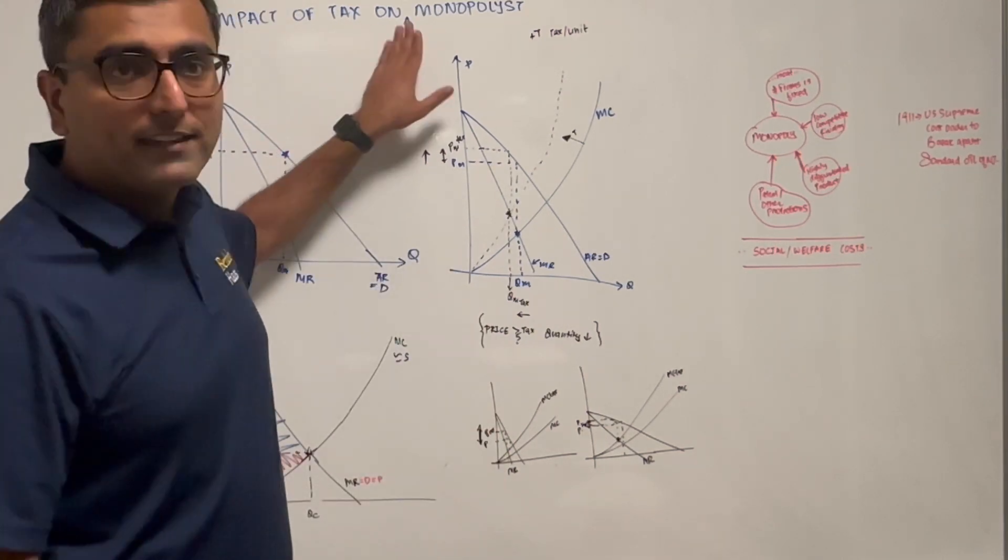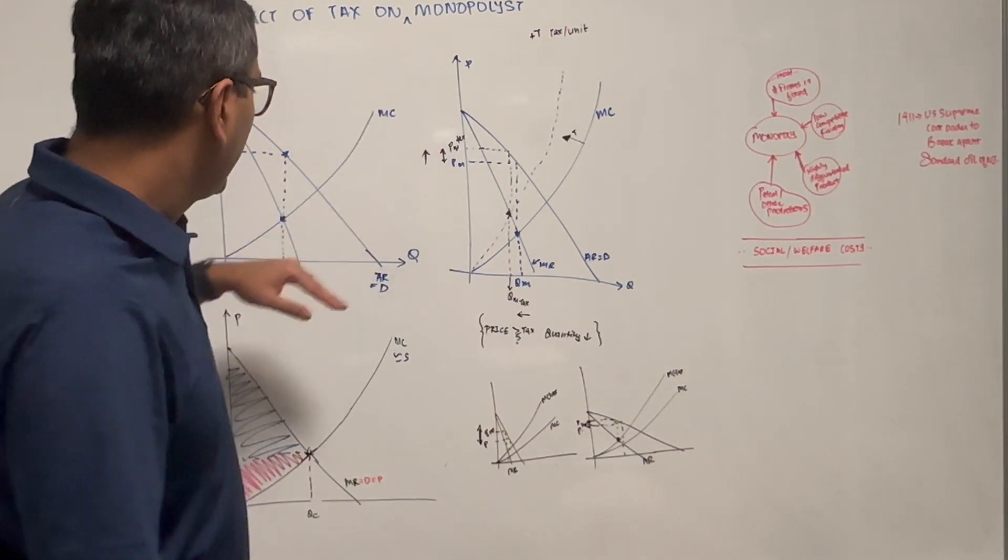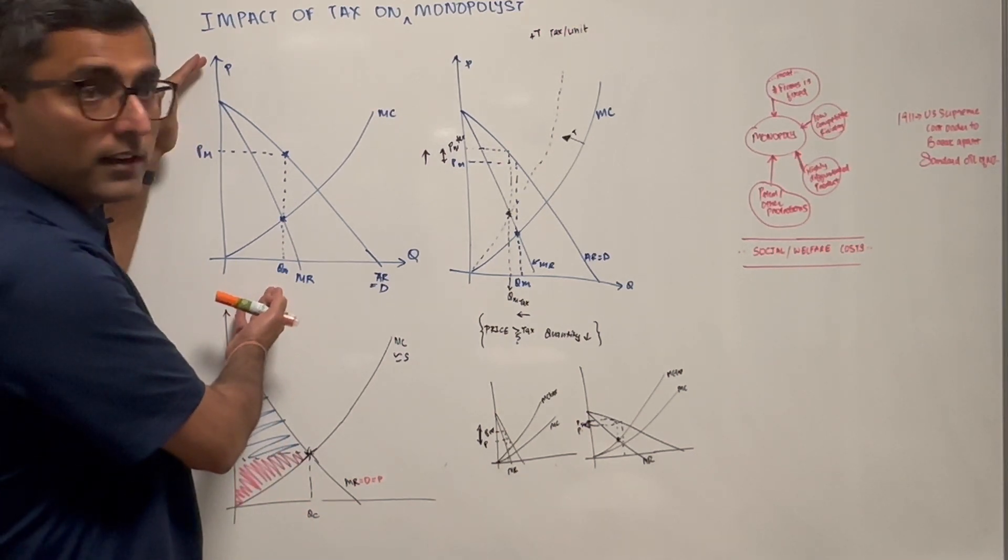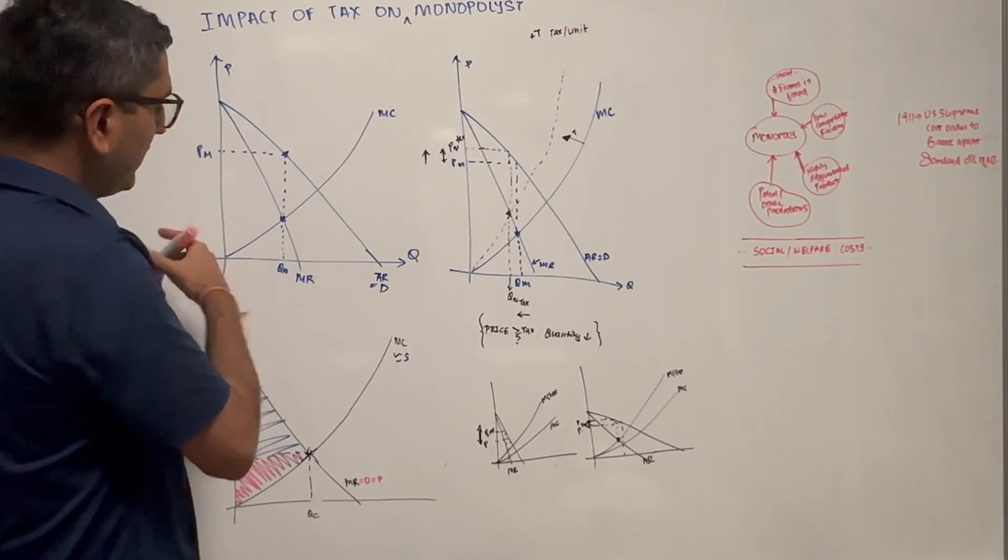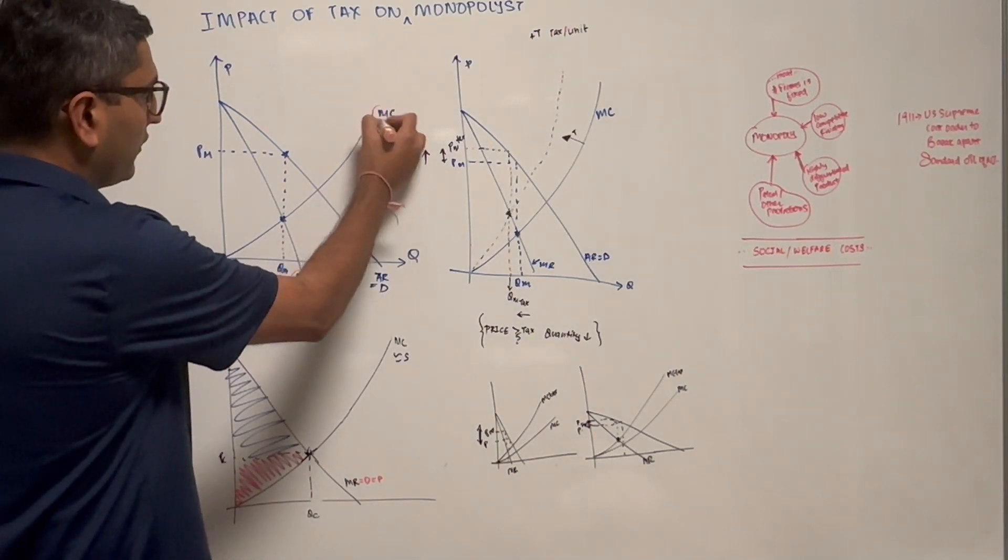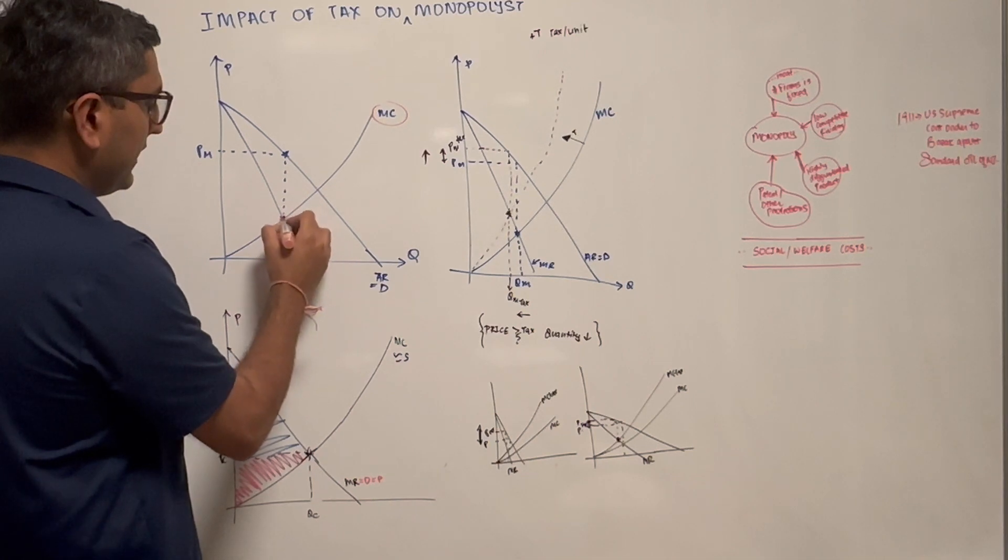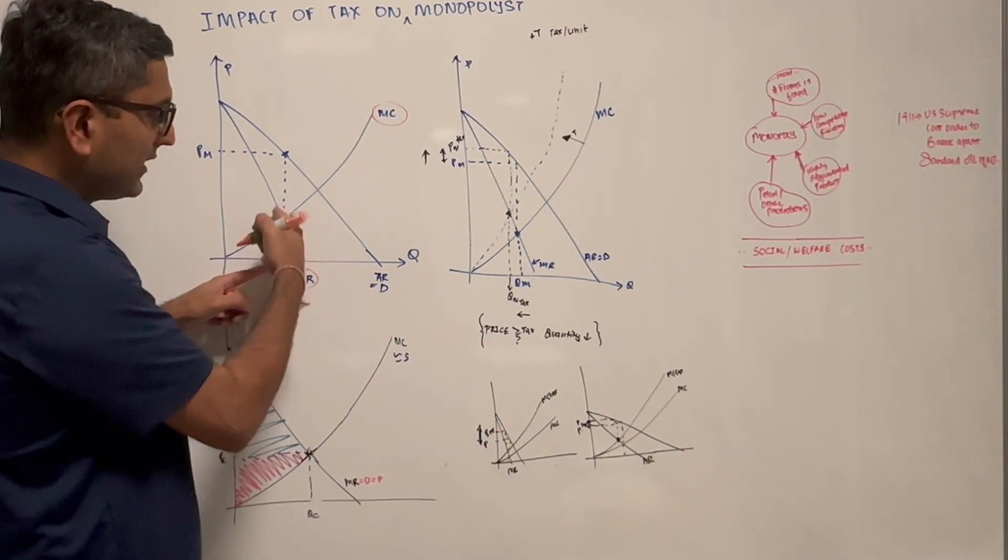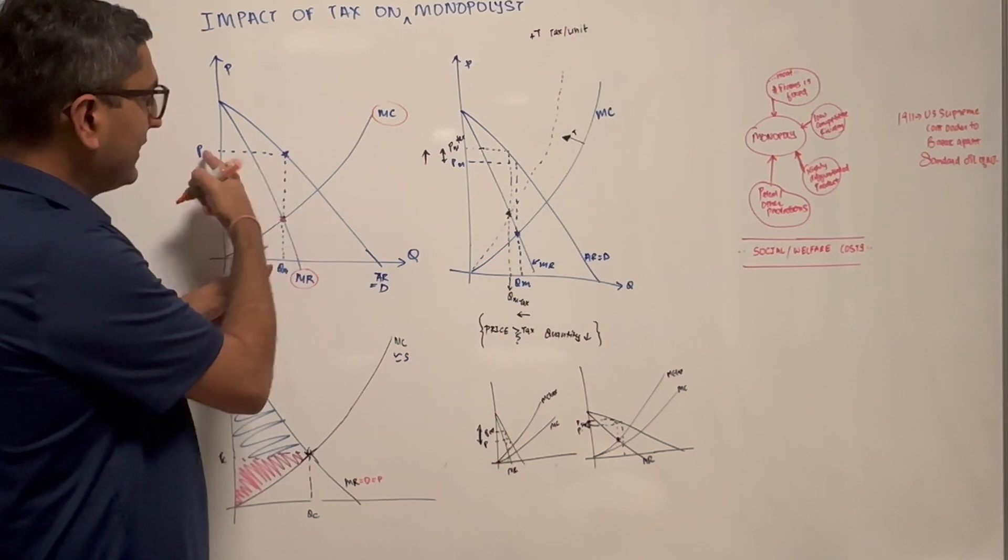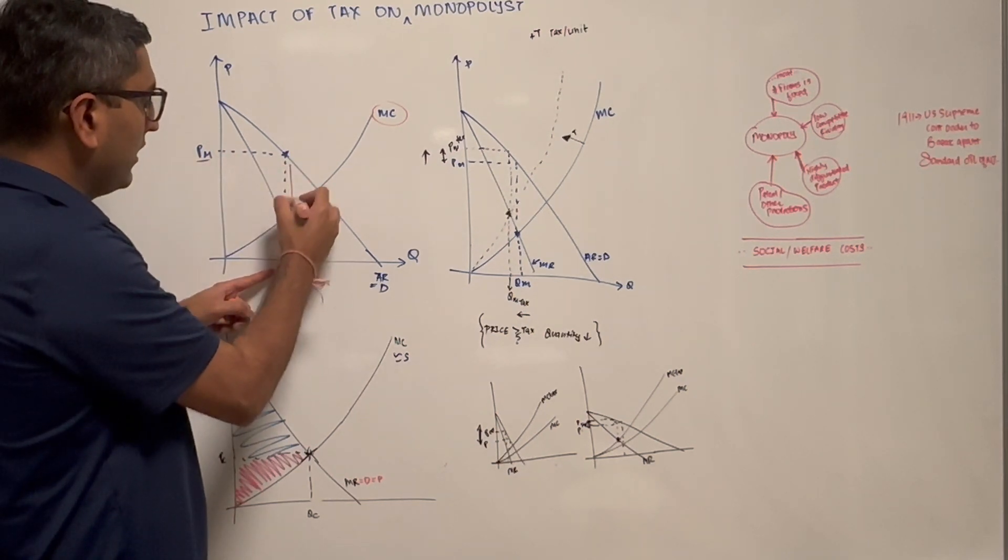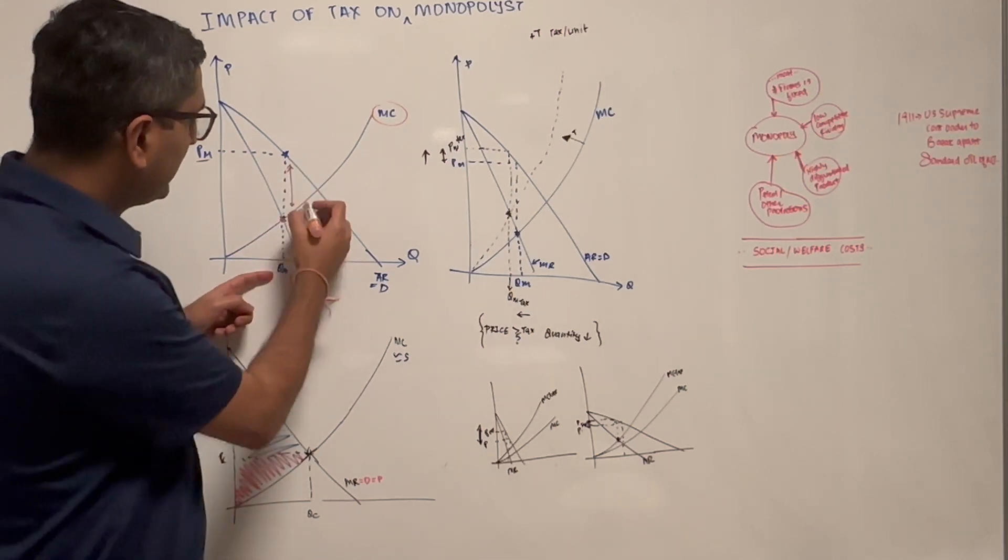So how does that impact the monopolist? We know typically in a regular circumstance the marginal revenue and marginal cost is where the monopoly will look at the quantity at which they intersect, and they'll set the price much higher based on that quantity.